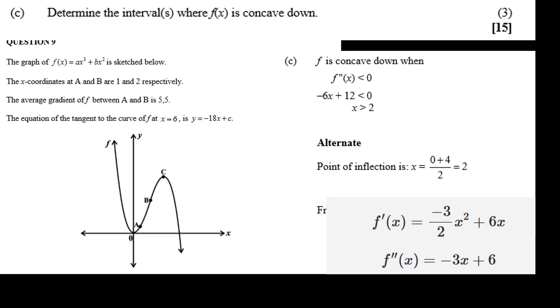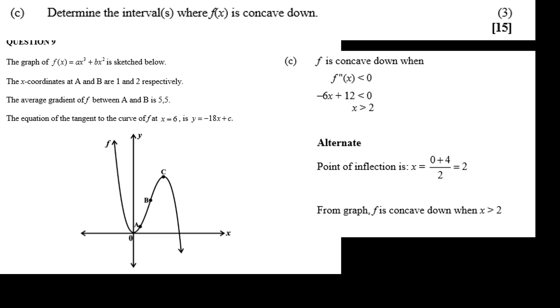A simpler way to get this is that if we know the point of inflection is midway between 0 and c, and we know from question 9b that the x-coordinate of c is 4, then we know that the point of inflection is 4 minus 0 over 2, or f of x is concave down when x is greater than 2.